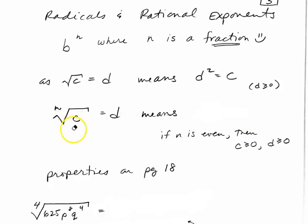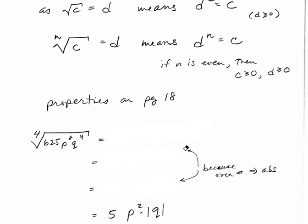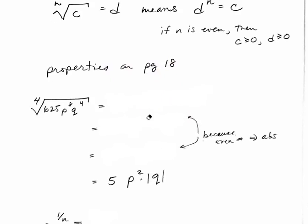And if the nth root of C equals D, that would mean that D to the N has to equal C. And then if N is even, then C has to be greater than 0 and D has to be greater than 0. So we'll focus in a little bit more on some of those rules, some of those particulars. But these are all the properties that are found on page 18 in your textbook. So you should just have that open as we're going through this.